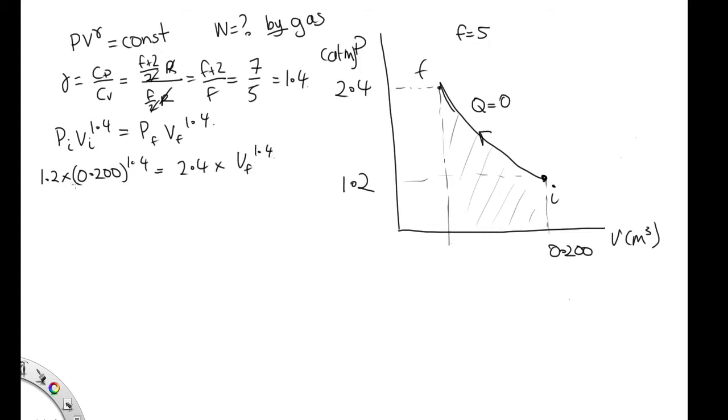We can solve this, divide 2.4 by 1.2, and we end up with 2. And then we can write 1.4 log 0.200 is equal to log 2 plus 1.4 log VF. These are just numbers you can work out on your calculator, and then divide by 1.4, and we end up with log VF is equal to minus 2.10. And so VF is equal to e to the minus 2.10, which is equal to 0.122 meters cubed.